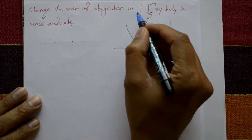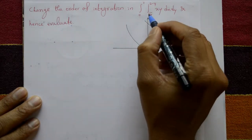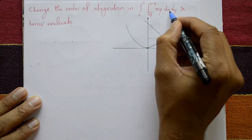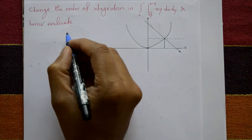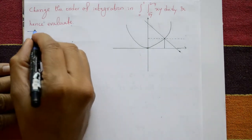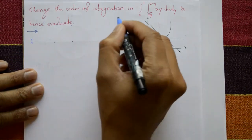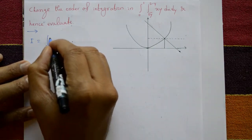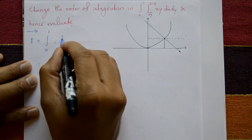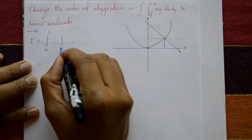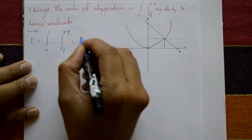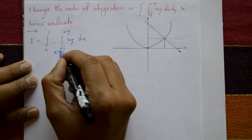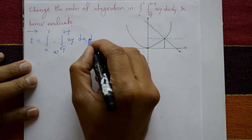Change the order of integration in the integral I = ∫₀¹ ∫_{√y}^{2−y} xy dx dy, and hence evaluate it. Solution: Given, I is equal to integration of 0 to 1, and integration of √y to 2−y, and the function is xy dx, where x goes from √y to 2−y.